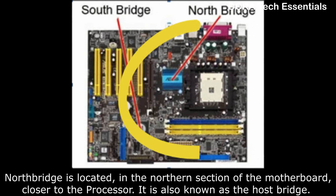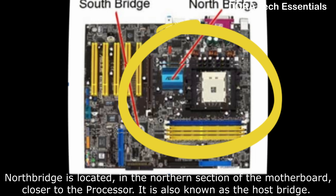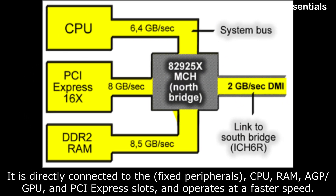North Bridge is located in the northern section of the motherboard, closer to the processor. It is also known as the host bridge. It is directly connected to the fixed peripherals — CPU, RAM, AGP/GPU, and PCI Express slots — and operates at a faster speed.